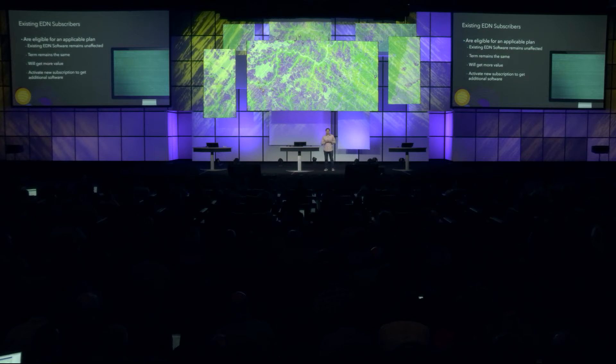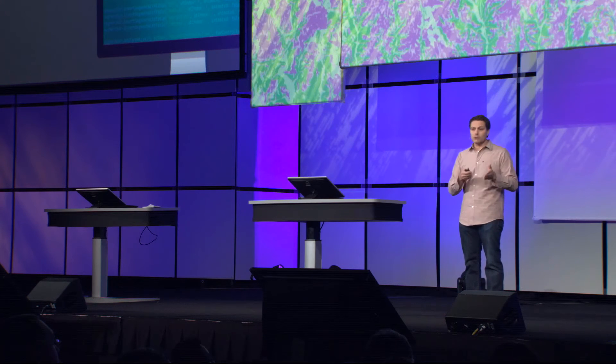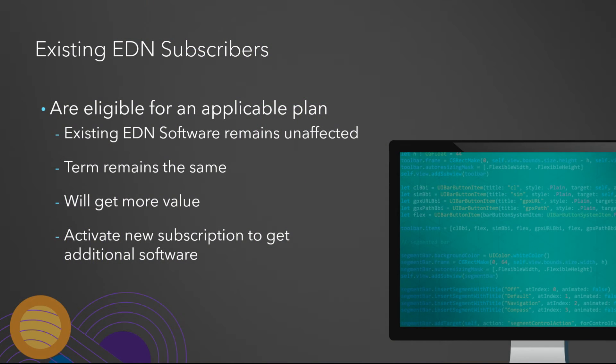For EDN subscribers, the software you're currently using through the EDN subscription remains uninterrupted. You don't have to relicense anything — you just keep using the software as you currently are, and your start and end terms remain the same. However, you will get more software and tooling. All you need to do is activate your new subscription.